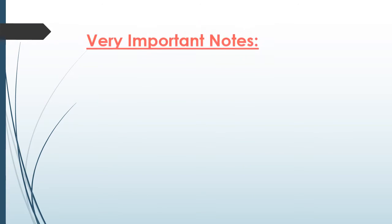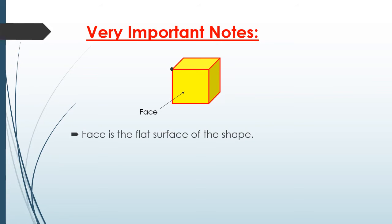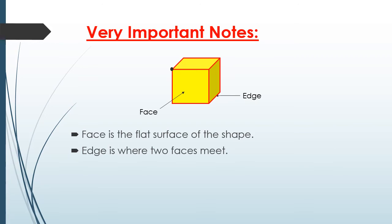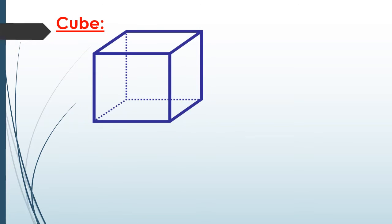We have to know a very important note before we start. If we have a shape like this, we have to know that faces are the flat surface of the shape. Edge is where two faces meet. Vertices are the corners where edges meet.